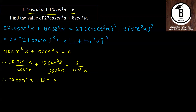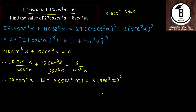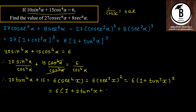यहां पे बचा 1/cos⁴, तो 1/cos = sec होता है, यानि sec⁴x। sec⁴ आया है तो square की formula apply करेंगे: sec²x की जगह 1 + tan²x रखेंगे, उसका square। a + b का square = 1 + 2·tan²x + tan⁴x। 6 से multiply करने पर: 6 + 12·tan²x + 6·tan⁴x।